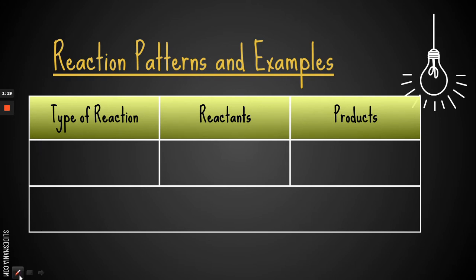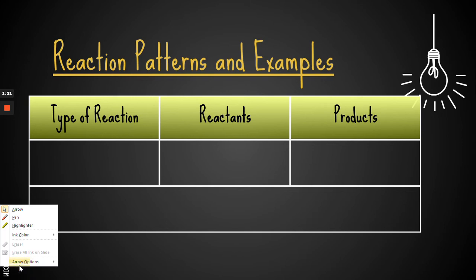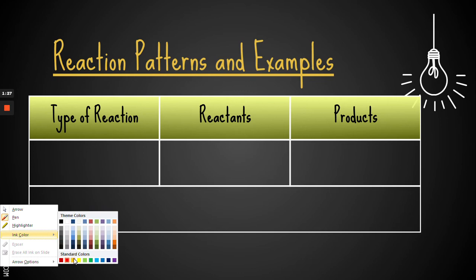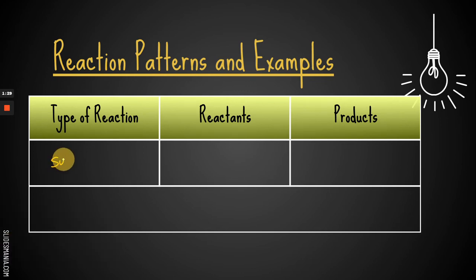So for our generic pattern, for the first one, we are going to talk about a synthesis reaction. Now in a synthesis reaction, what happens is you have two or more reactants, and they come together to make only one product, and this is kind of the pattern that you're going to look for. Multiple reactants in one product. It's the only one that has only one product. So this is our generic.